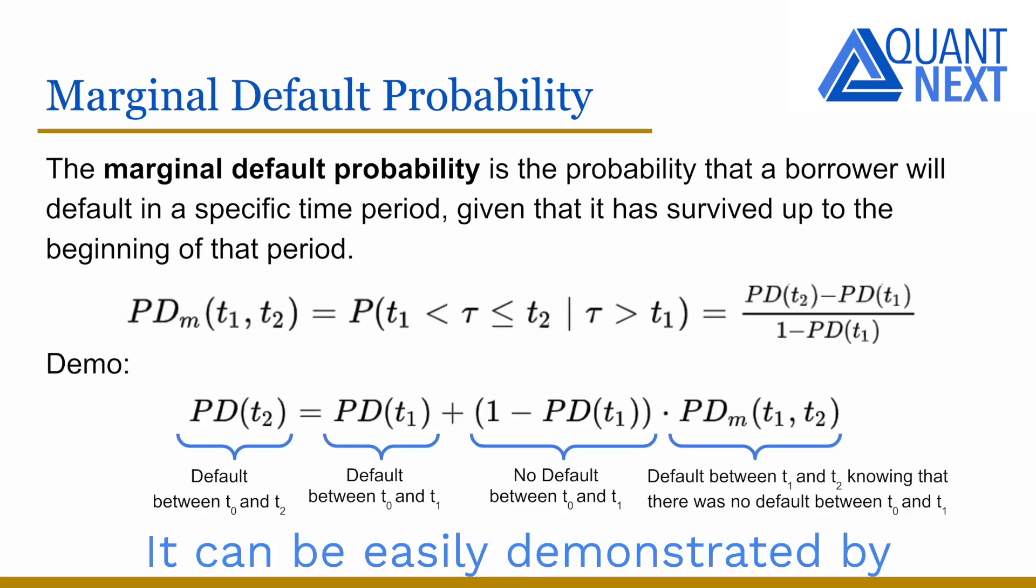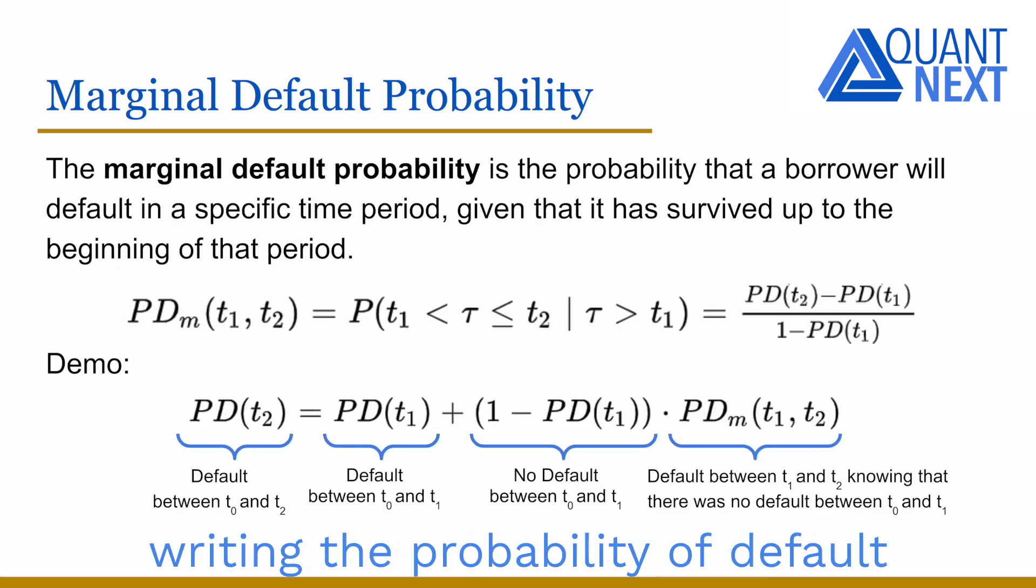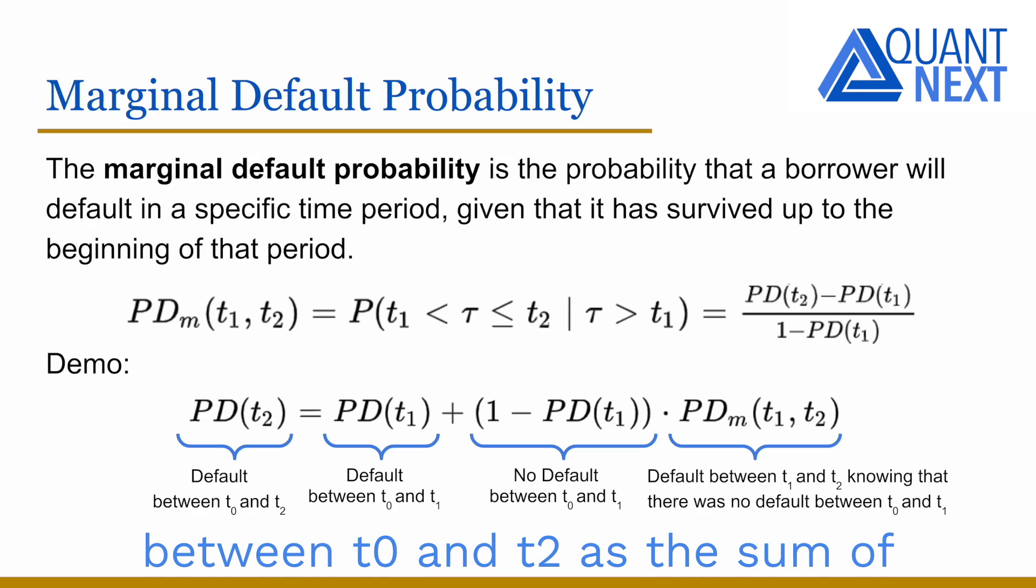It can be easily demonstrated by writing the probability of default between t0 and t2 as the sum of the probability of default between t0 and t1 and the product of the probability that there is no default between t0 and t1 and the probability that there is a default between t1 and t2 knowing that there is no default before t1, the latest probability being the marginal default probability between t1 and t2.